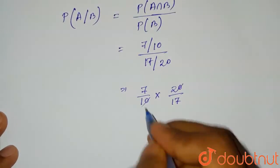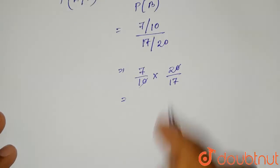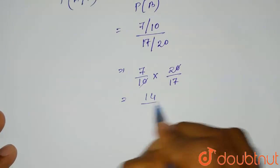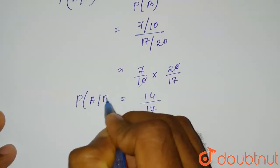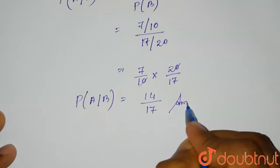So from here 10 and 20 will be cancelled. So ultimately what we will have, it will be equal to 7 into 2 which is 14 divided by 17. So this is the required solution, that means this is the value of P of A given B and this is the correct answer for this question.